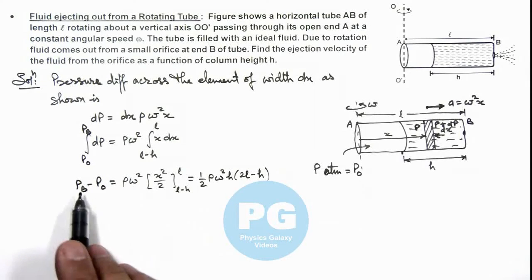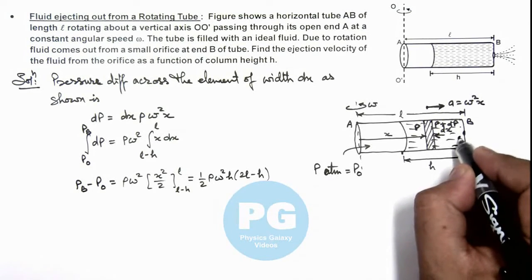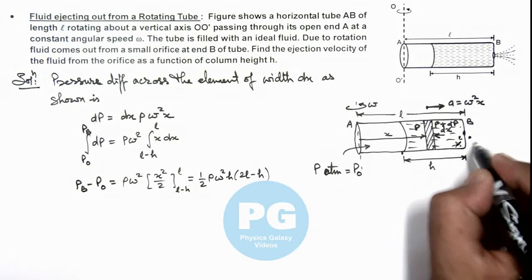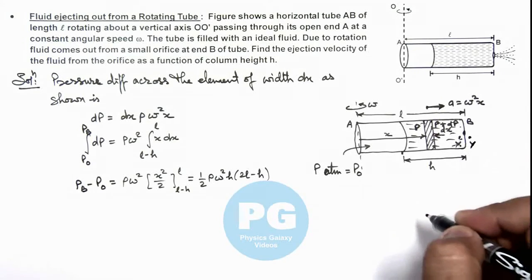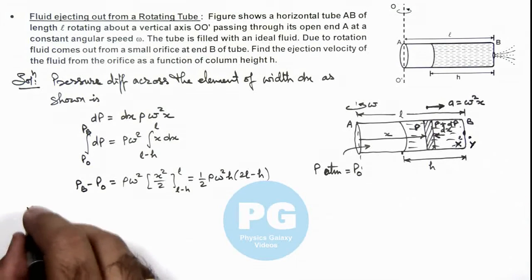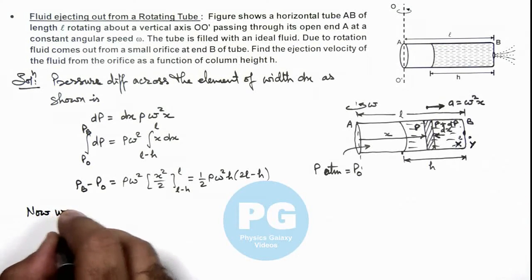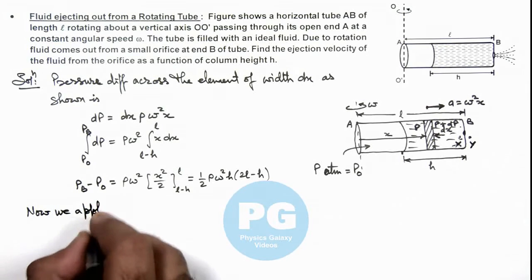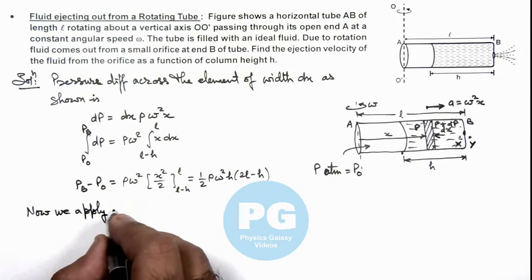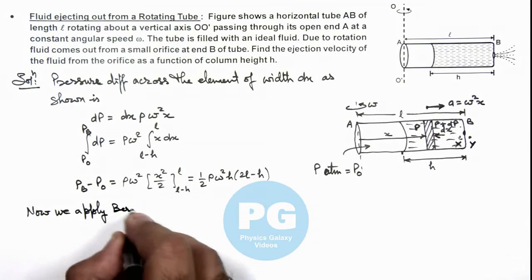Now once we have got the value of pressure at point B in terms of atmospheric pressure, just inside and outside B we consider two points X and Y. Here we can write, now we apply Bernoulli's theorem